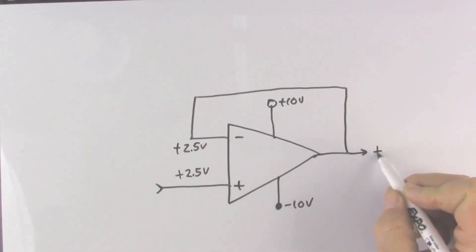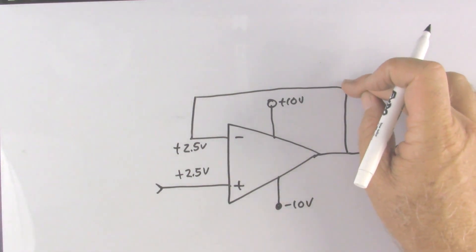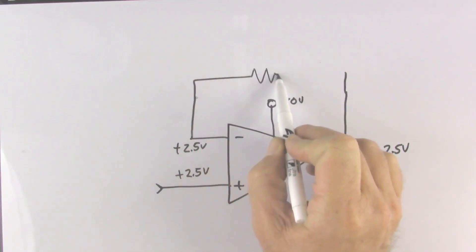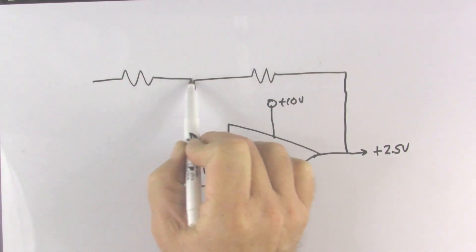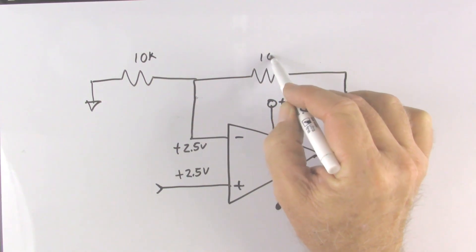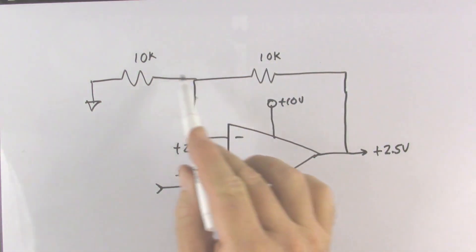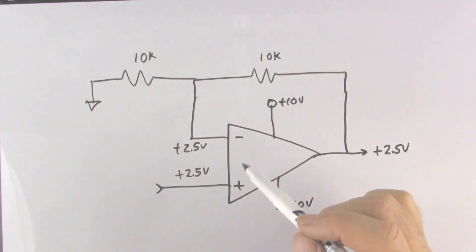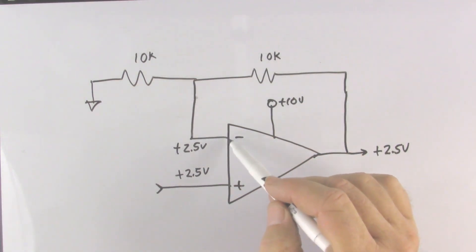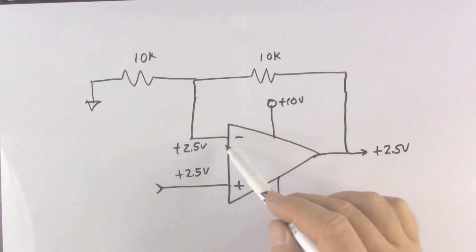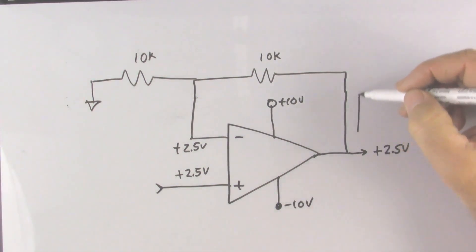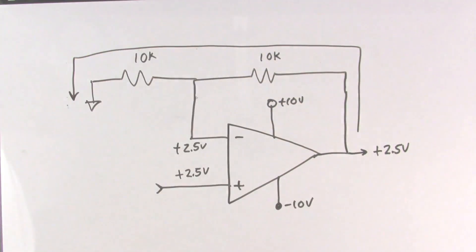Since it is directly connected, the output will be plus 2.5 volts. To make this a non-inverting amplifier we need to add a voltage divider to the feedback network, with that connected to ground. Let's make them two equal resistors. So here is a voltage divider on the feedback loop — it's a series circuit from the output back to ground. Remember that there is virtually no current flowing into the op amp, so there is no current path here at all. There is only one current path, from the output through the voltage divider to ground.